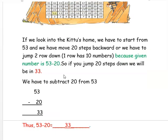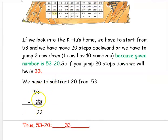We can also find this using subtraction: 53 minus 20 — 3 minus 0 is 3, and 5 minus 2 is 3 — so 53 minus 20 is 33.